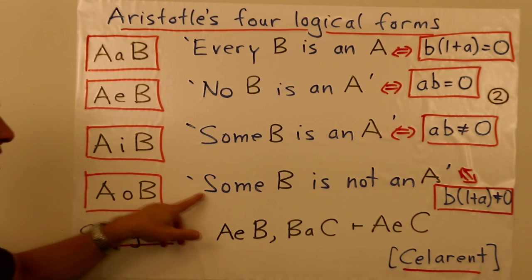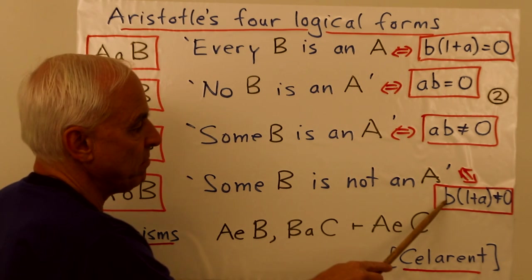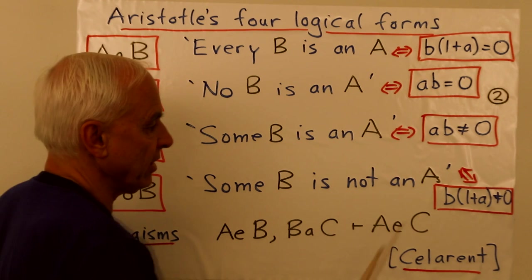And A little o B is some B is not an A, sort of the opposite of this one. And so that's given by B times one plus A does not equal zero.